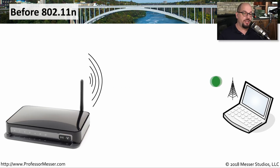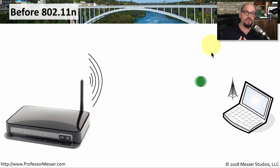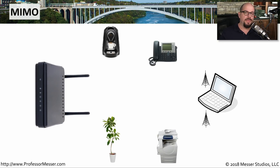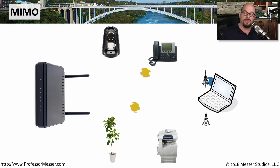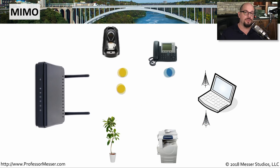On 802.11a, b, and g, there was one antenna on the access point and one on the client, with communication occurring over a single frequency. When 802.11n introduced MIMO, it provided a completely new way to communicate. MIMO requires signal diversity — signals can bounce off objects and reach the destination device, where the data is reconstructed using digital signal processing. This allows multiple streams of information to be sent between devices over exactly the same frequency.